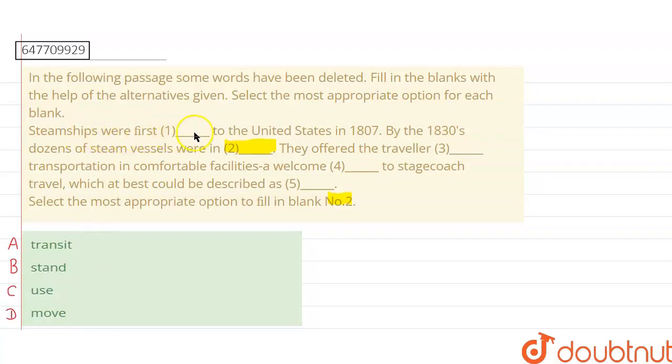Steamships were first [blank] to the United States in 1807. By the 1830s, dozens of steam vessels were in [blank]. They offered the traveler [blank] transportation in comfortable facilities, a welcome [blank] to stagecoach travel, which at best could be described as [blank].